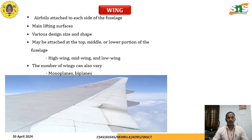The wing is made up of different types of aerofoils aggregated by NACA. It is the aerofoil attached on each side of the fuselage, and the main purpose of the wing is to produce the lifting force. Wing types vary based on position and shape — attached on the top, middle, or lower portion of the fuselage, called high-wing, mid-wing, and low-wing. The number of wings can vary, as in a monoplane or biplane.